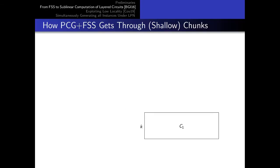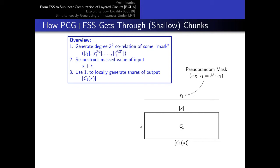Consider a shallow circuit C1 of depth K. Recall that the goal of the parties is to convert additive shares of the input X into additive shares of the output of the circuit. At a high level, the protocol has three steps. The first is to generate the first 2^K tensor powers of some random vector we'll call the mask — we call it the mask because we're going to use it to mask the input. The second step is for the parties to exchange shares of X plus R1 in order to reconstruct this masked value of the input.